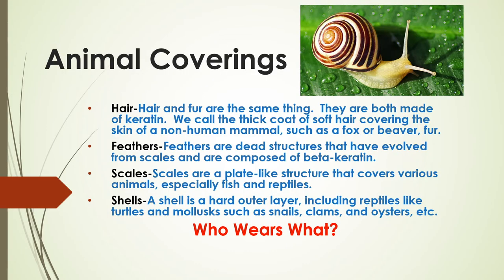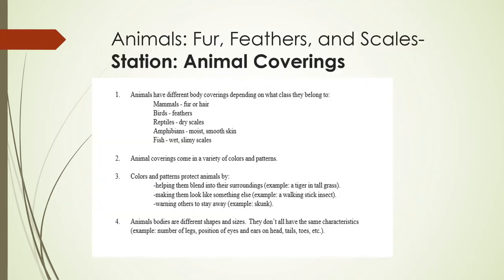We call it fur when it's a thick coat of soft hair covering the skin of non-human mammals, such as a fox or beaver. Feathers are dead structures that have evolved from scales and are composed of beta-keratin. Scales are plate-like structures that cover various animals, especially fish and reptiles. A shell is a hard outer layer, including reptiles like turtles and mollusks such as snails, clams, and oysters.